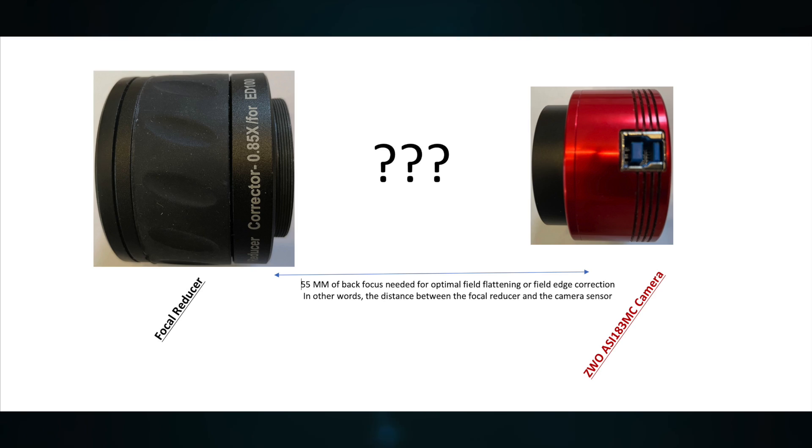So on the left, you notice the focal reducer corrector that I have for my ED100 telescope. It's kind of a dual purpose—it's both a focal reducer and also a field edge corrector. And if you look at the documentation, it states it needs 55 millimeters of back focus.